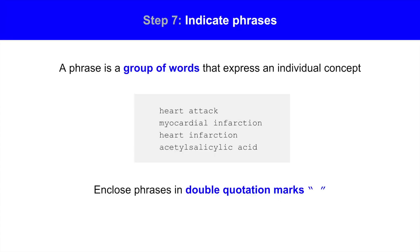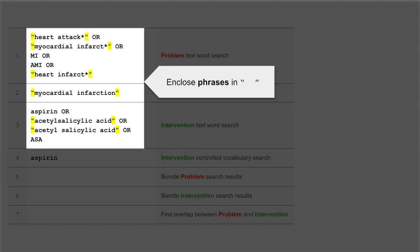Step 7: Indicate phrases. Examine the search terms for phrases, which are groups of words that express an individual concept. In our strategy, phrases include heart attack, myocardial infarction, and so forth. To search for a phrase, enclose the terms in double quotation marks — the search will retrieve the precise phrase, with terms in the same order and no other words between them. Note that individual terms like aspirin do not need quotation marks.